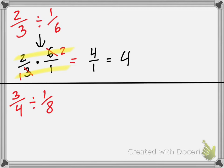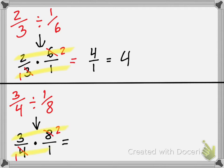Camilla, what about the second one? Keep three over four, change the division symbol to multiplication, then flip eight over one. Can I cross-cancel the four and eight? Yes — the eight becomes a two and the four becomes a one. Cross-multiply and we get six over one, which is six. Excellent work.